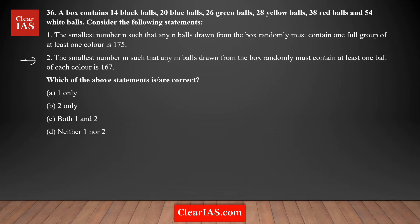Now let's analyze statement two. Statement two says that the smallest number m such that any m balls drawn from the box randomly must contain at least one ball of each color is 167. So the minimum balls you should select to satisfy this condition is 167; we need to check whether this is right. After selecting 167 balls, the selection must contain at least one ball of each color.